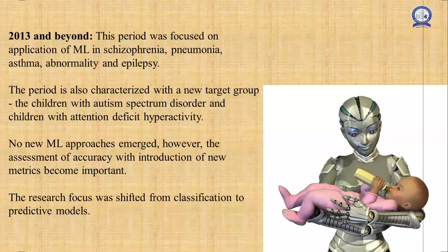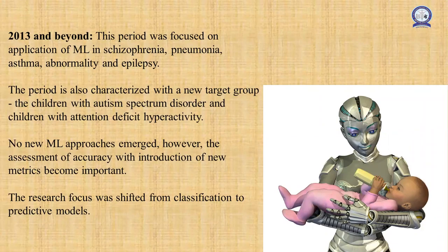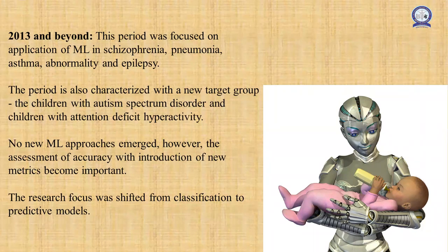After 2013, this period was focused on application of machine learning in schizophrenia, pneumonia, asthma, abnormality, and epilepsy. The period is also characterized with a new target group: children with autism spectrum disorder, children with attention deficit hyperactivity disorder, and others. The research focus was shifted from classification to predictive models.